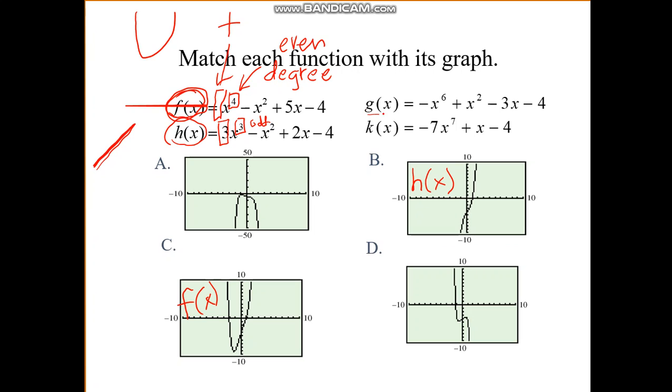All right, let's look at g of x. Now we have degree six, which is even again. We have a leading coefficient. We just have a minus sign, which is an implied negative one. So that's negative. So if we have an even degree and a negative leading coefficient, we're going to have something concave downward. So this one goes with g of x.